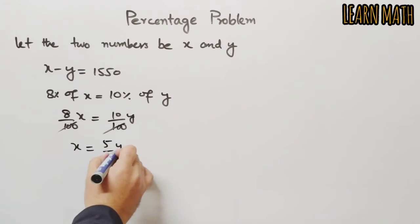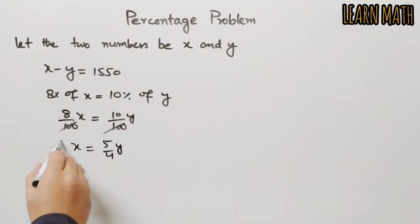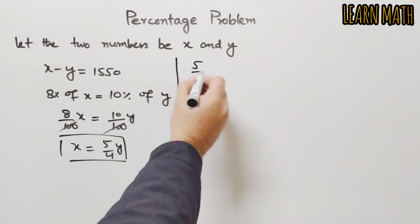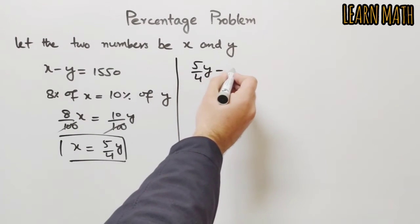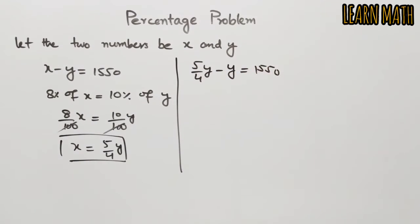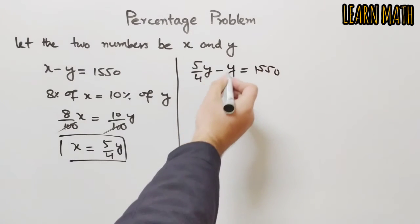Now we will put this x is equal to 5 by 4 y in that equation. So 5 by 4 y minus y is equal to 1550. Now we will subtract y from 5 by 4 y.